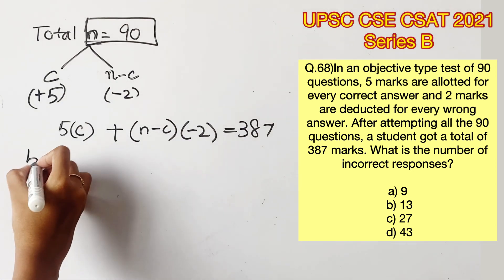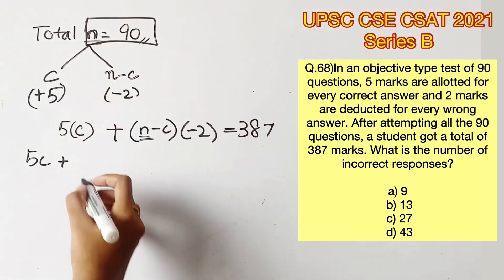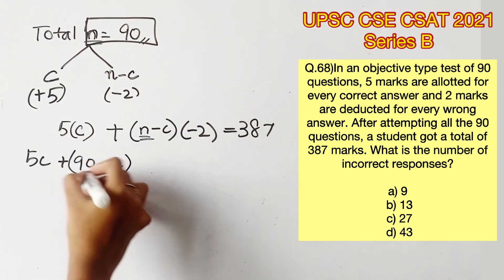Now since we know the value of n already, that is 90, we can substitute it here and then find the number of correct responses.